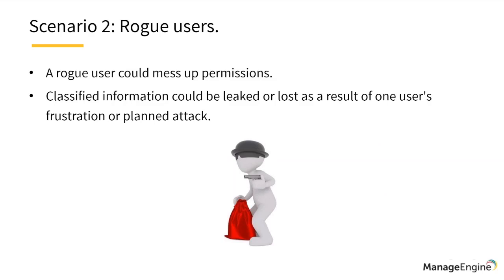The next scenario has to do with rogue users. Certain mailboxes contain sensitive information. If there is a rogue user — someone who was suddenly fired, or someone who is generally malicious — they could gain full access permissions over an important mailbox and then leak the classified information present in that mailbox. They could find out what sensitive information is available, leak it to a competitor, and cause your organization to lose an important business deal. The system administrator gets blamed, which is why you need to audit mailbox permission changes.